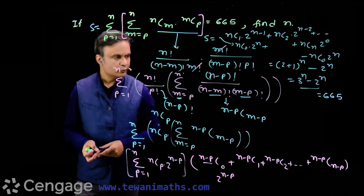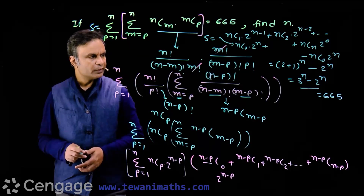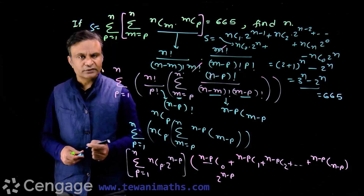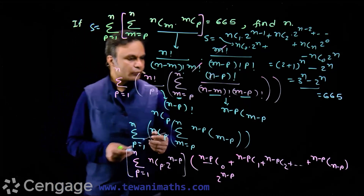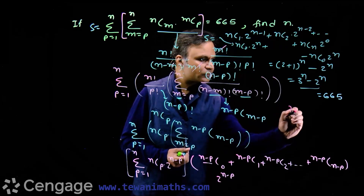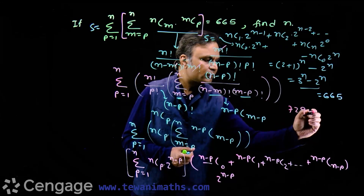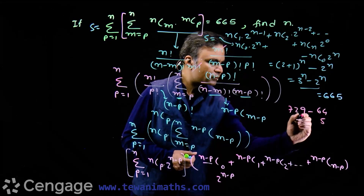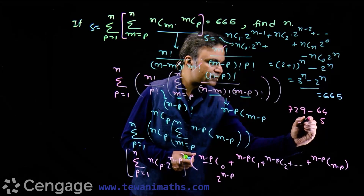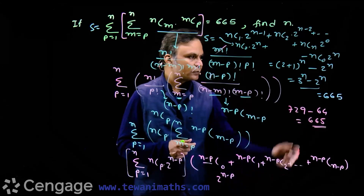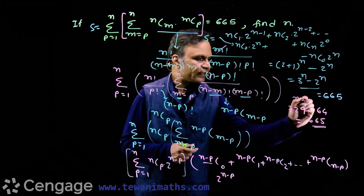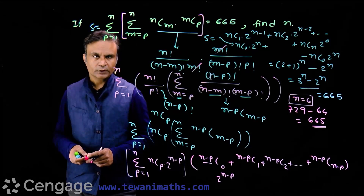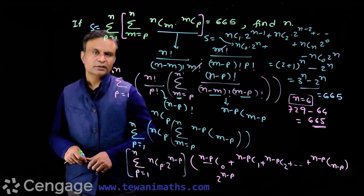Can you tell what n will be? 3 power 5 is 243, and 3 power 6 is 729. So we try n equal to 6. For n equal to 6, we have 729 minus 2 power 6 which is 64, and this difference is 665. So the value of n is equal to 6. Now let us try some more questions in this group.